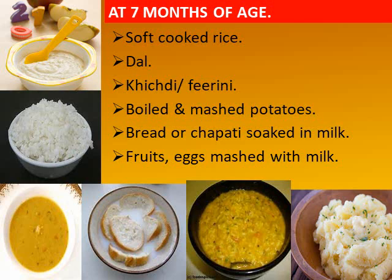At the age of seven months, we can give soft cooked rice, dal, boiled and mashed potatoes, bread and chapati, fruits, and eggs mashed with milk — almost everything that is easily available in our home.